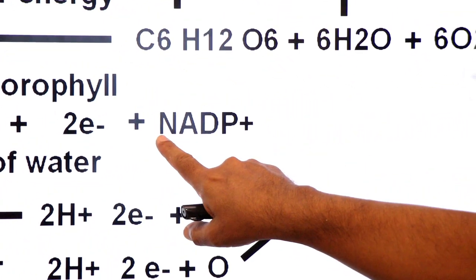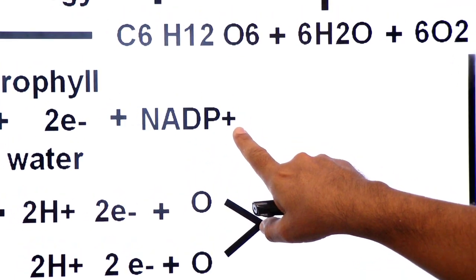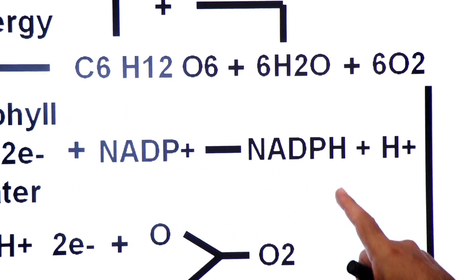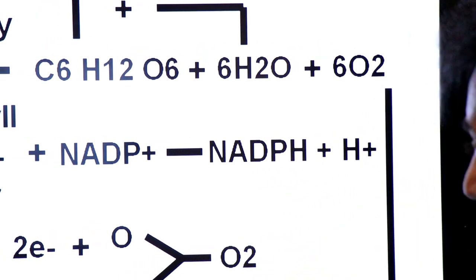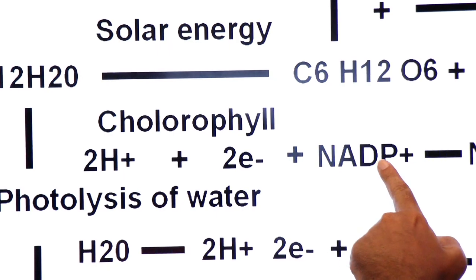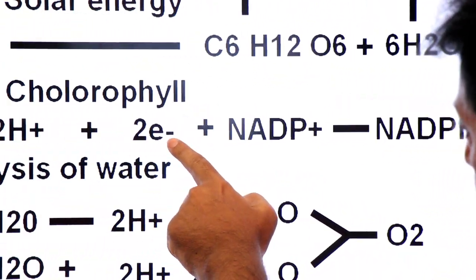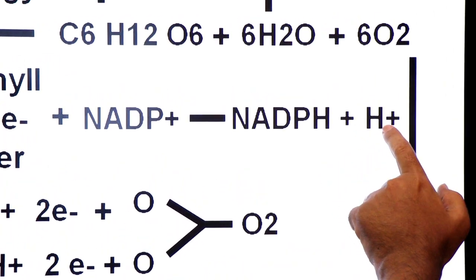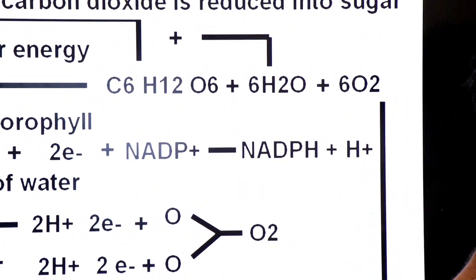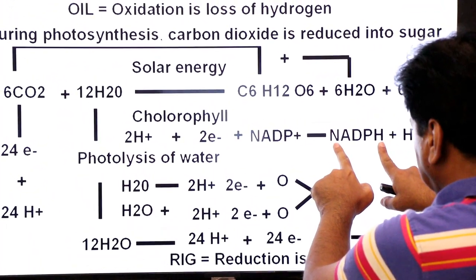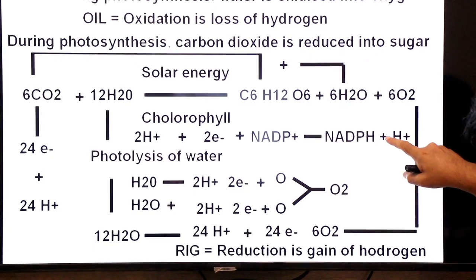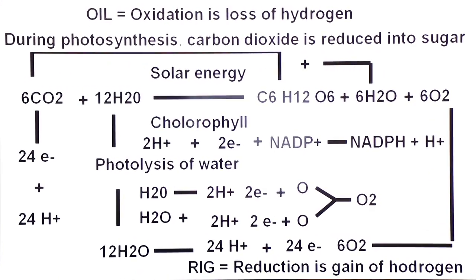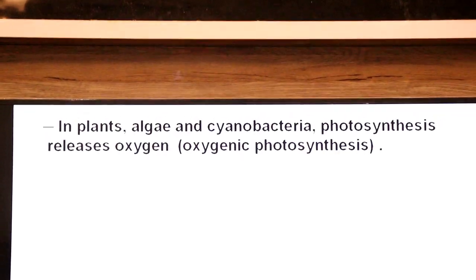NADP⁺ stands for nicotinamide adenine dinucleotide phosphate. It carries a positive charge because it has lost an electron. It is reduced to NADPH + H⁺. In the process: NADP⁺ gains two electrons and one proton — one electron neutralizes the positive charge on NADP⁺, another electron neutralizes one proton, but a second proton remains charged since no third electron is available. The '+H' in the equation represents a proton donated to the solution.